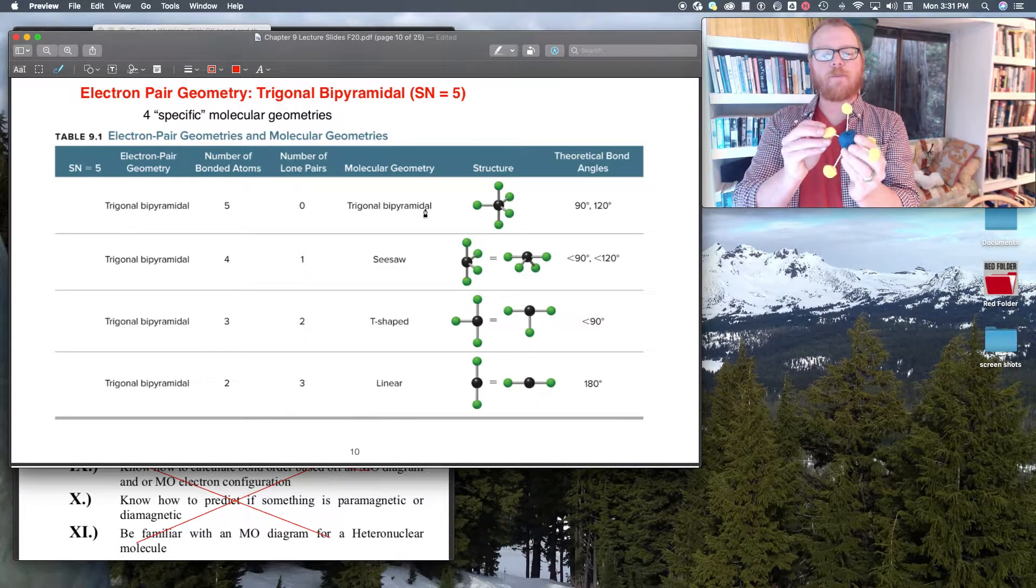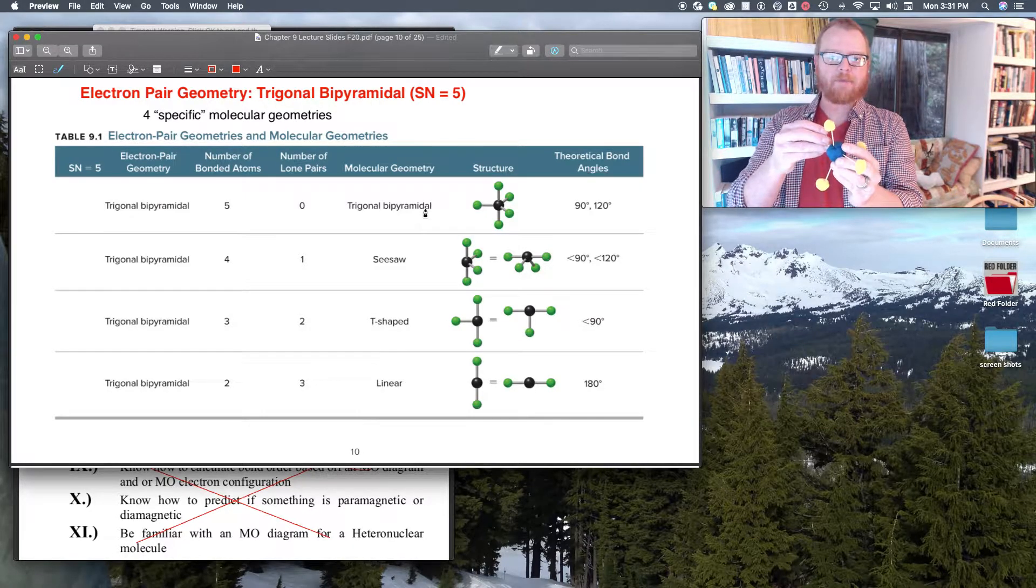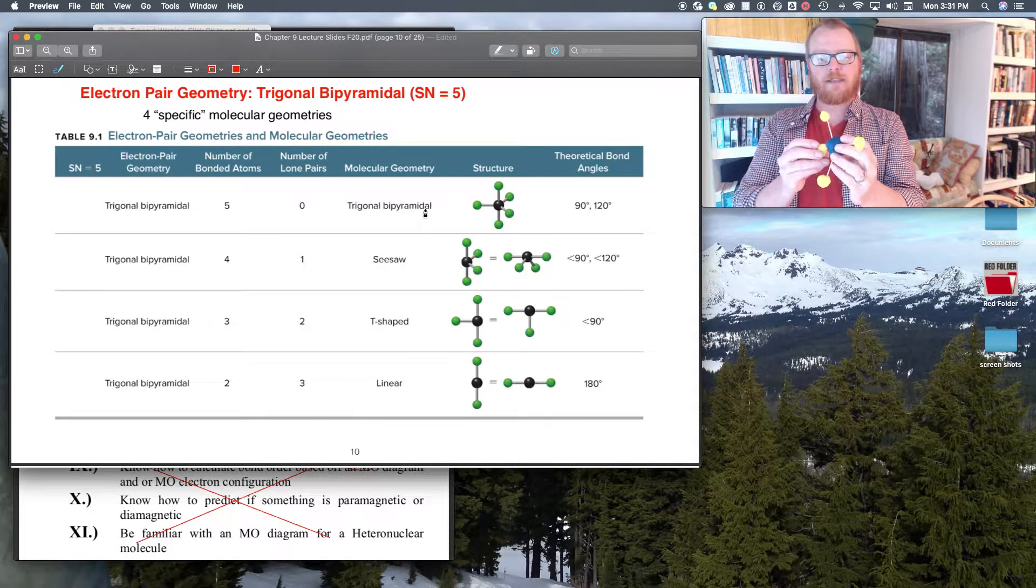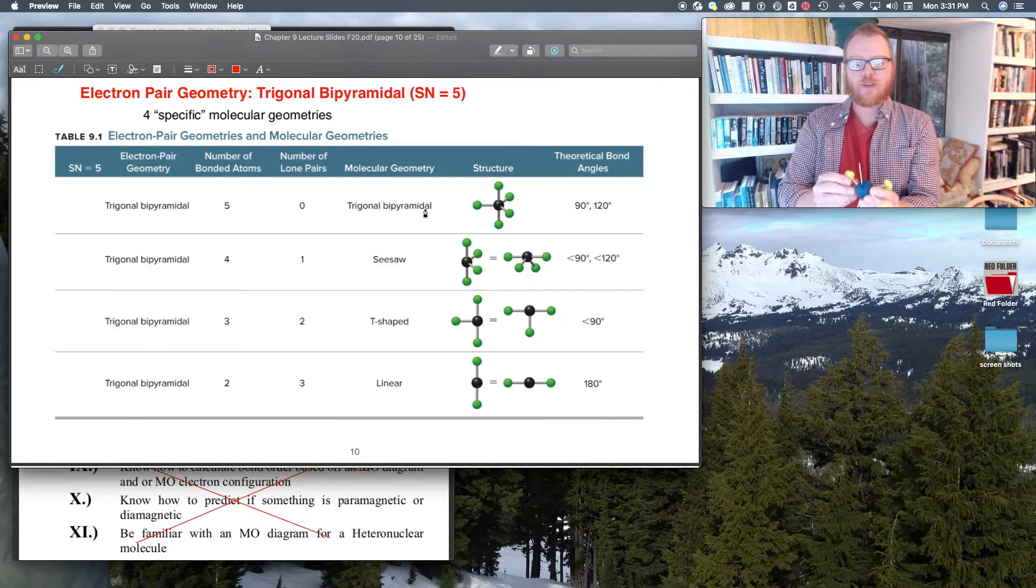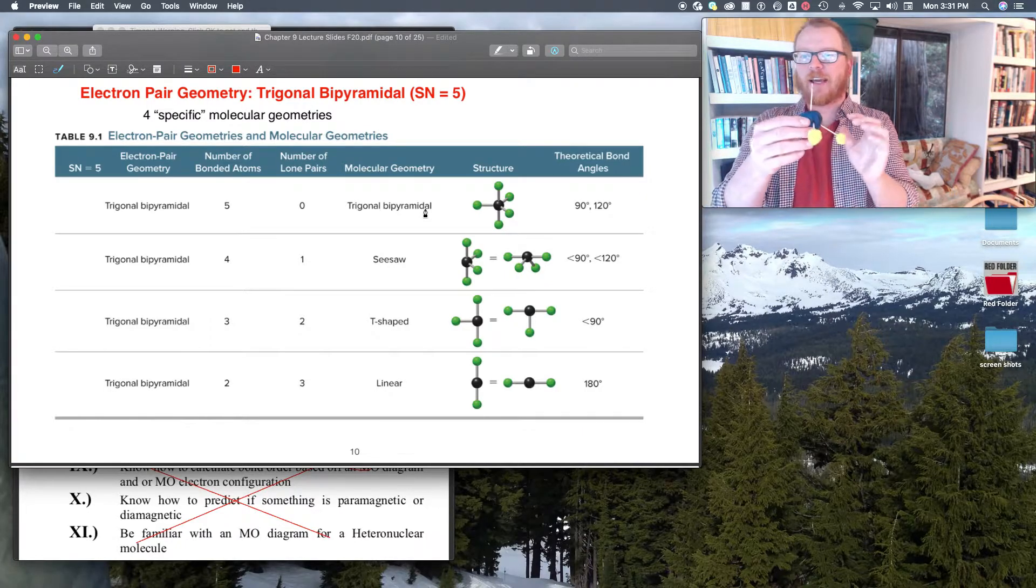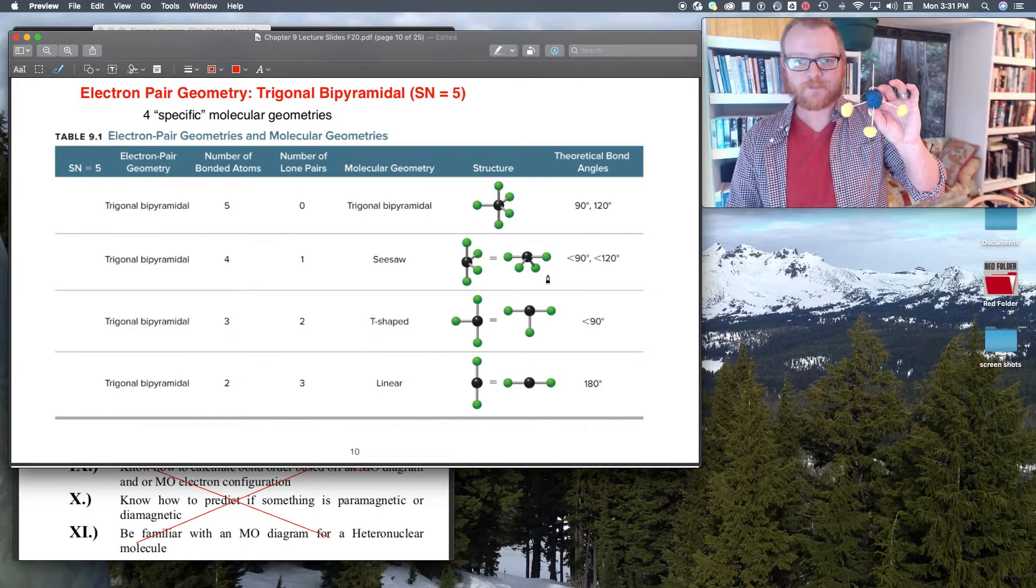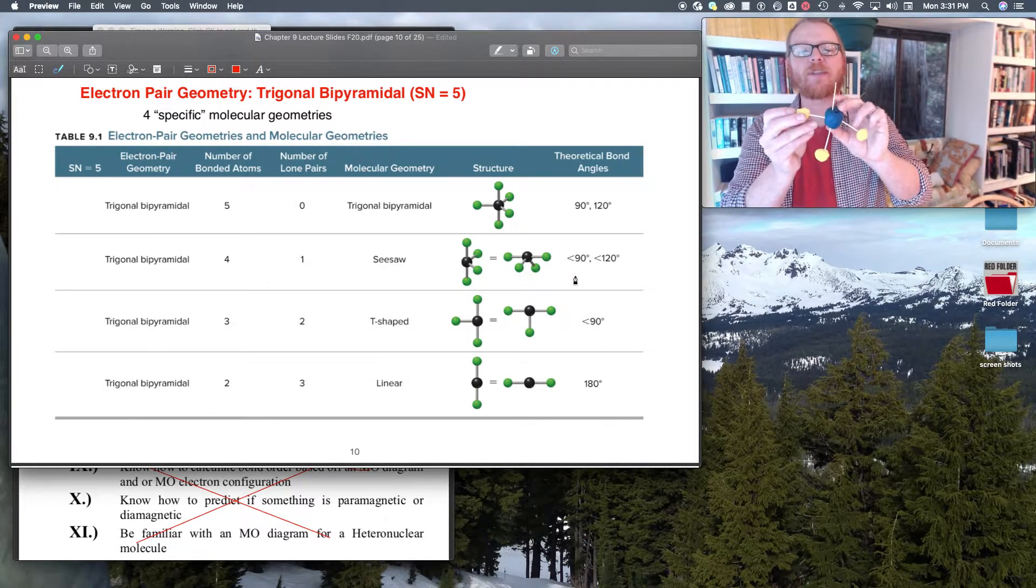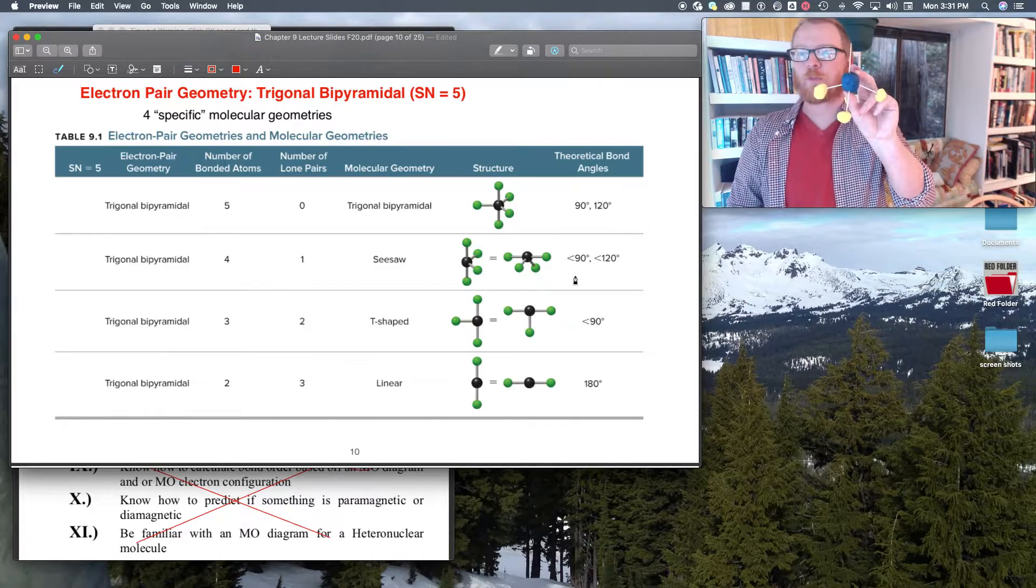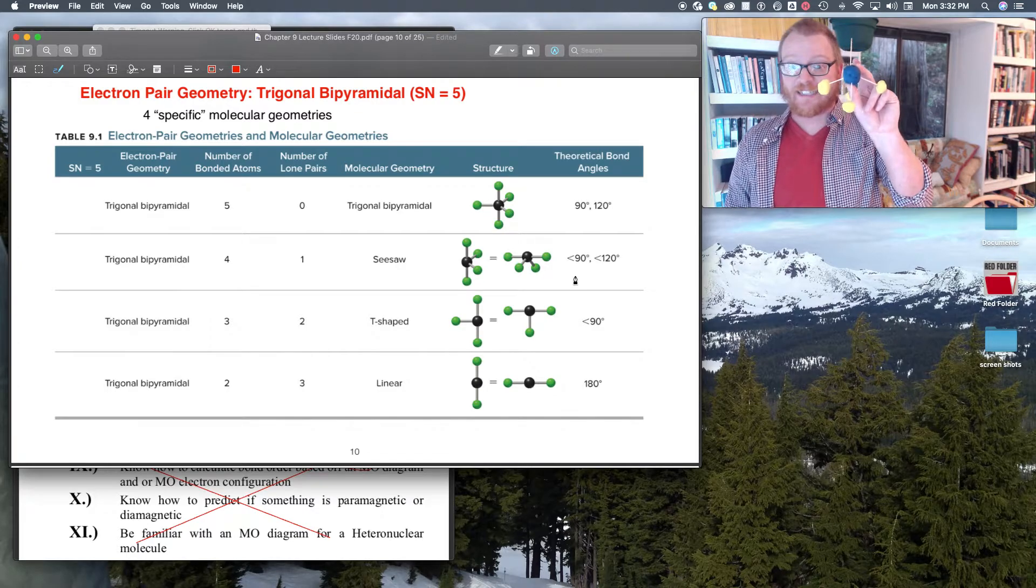So now what if I make one of these a lone pair? I'll take away one that would be easiest for me to describe. So this is now called the seesaw, because literally it looks like a seesaw. You could go back and forth tipping it. And what this means now is these angles are no longer 90. So actually the way that this naturally wants to droop like that, that's what would happen. These electron pairs would be repelling these things down.